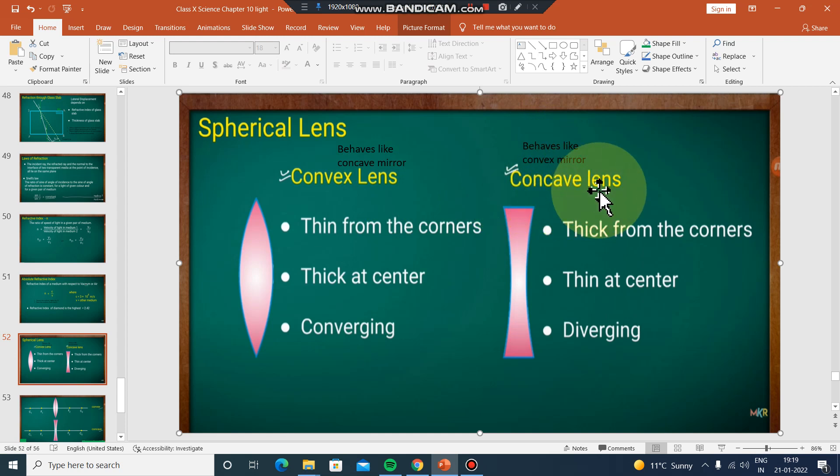So, the convex lens has two focal points - it's thin from the corners, meaning both sides and corners are thin, but thick at the center. The convex lens is a converging lens, while the concave lens is a diverging lens.